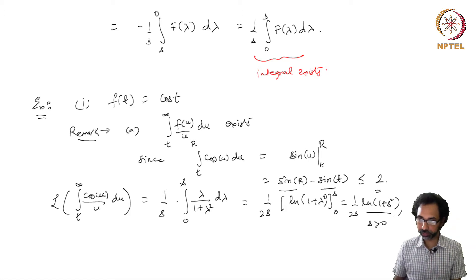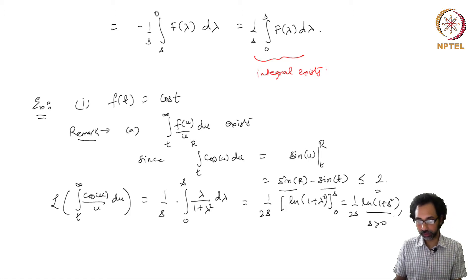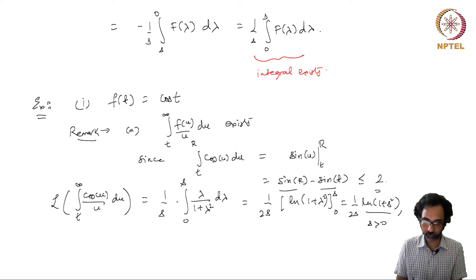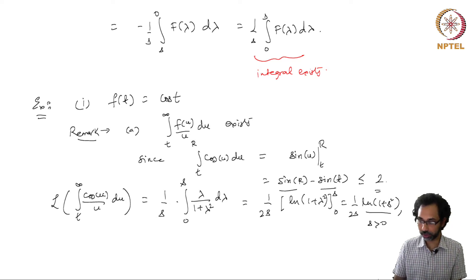So we see that for f(t) = cos(t), the Laplace transform of the improper Riemann integral ∫ from t to ∞ of cos(u)/u du is (1/(2s)) ln(1 + s²).